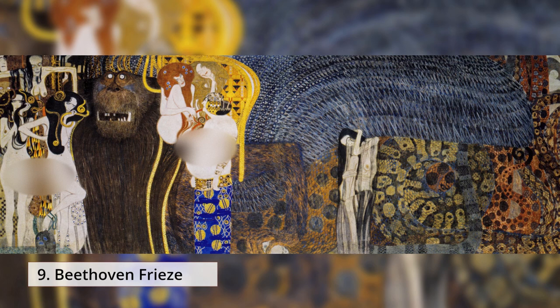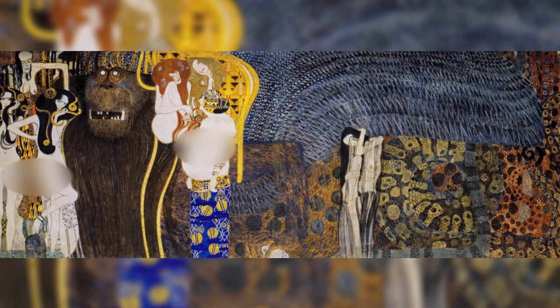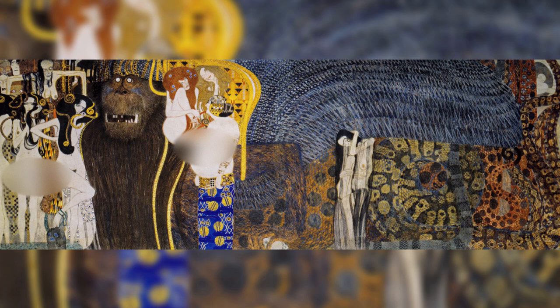9. Beethoven Frieze. This painting was directly painted on the walls with light materials and first exhibited at the 14th Vienna Secessionist.